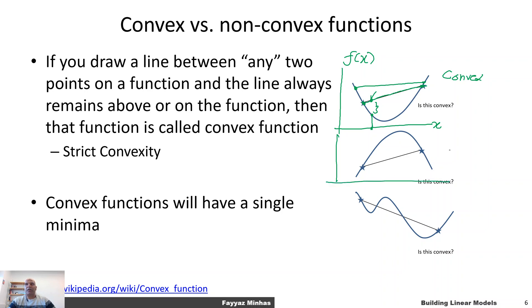Let's take a counter-example. For this other function shown in blue, if we take this line, it shows that there are places where the function has a higher value than the line — the function is above the line. So this will not be a convex function; we call it non-convex.